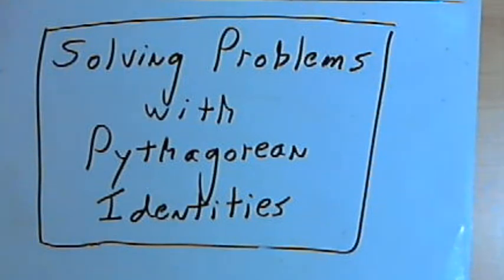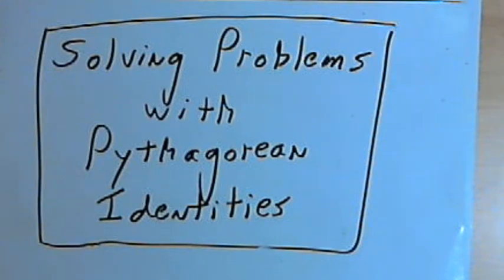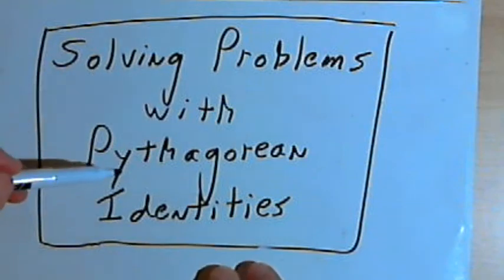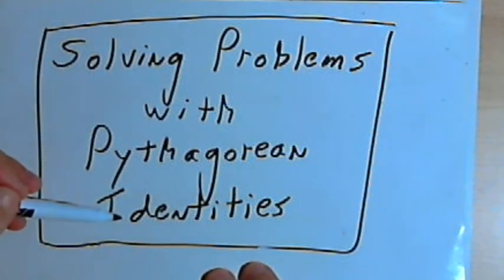This video is provided as supplementary material for courses taught at Howard Community College. In this video I want to show how to solve some trigonometric problems by using Pythagorean identities.